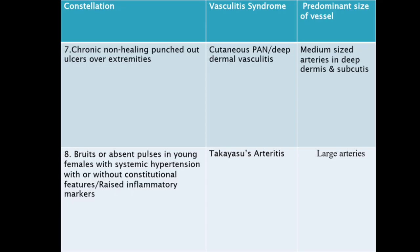Chronic non-healing punched-out ulcers over extremities — this is cutaneous PAN (polyarteritis nodosa), not systemic PAN. There is a deep dermal vasculitis where medium size arteries in the deep dermis and subcutis are involved. Then we have bruits or absent pulses in young females with systemic hypertension, with or without constitutional features and raised inflammatory markers — classic Takayasu's large vessel vasculitis.